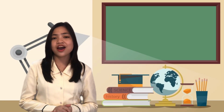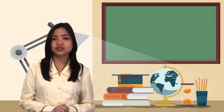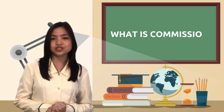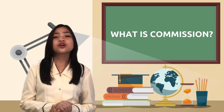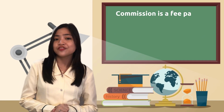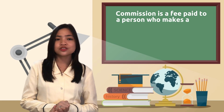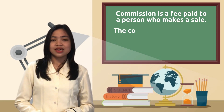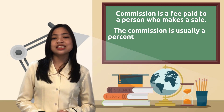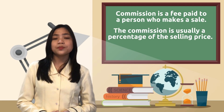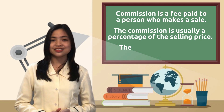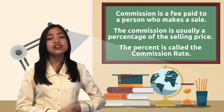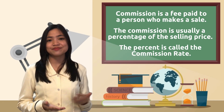Let us first define commission. So, what is a commission? Commission is a fee paid to a person who makes a sale. The commission is usually a percentage of the selling price. The percent is called the commission rate.